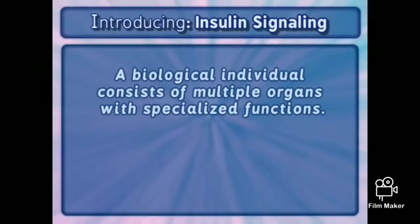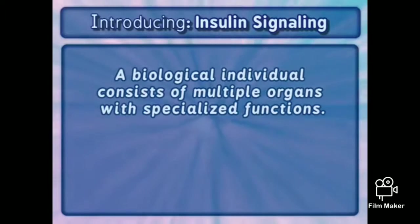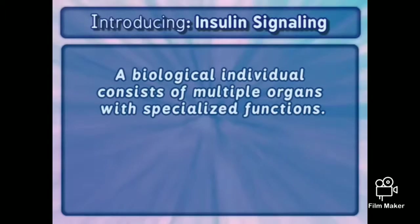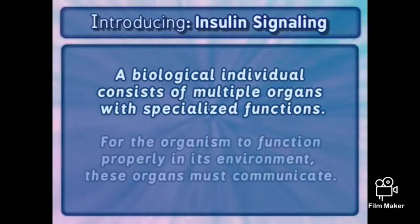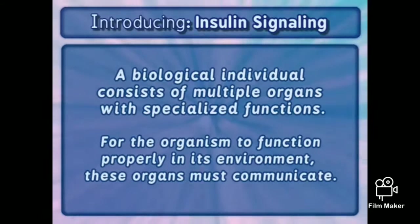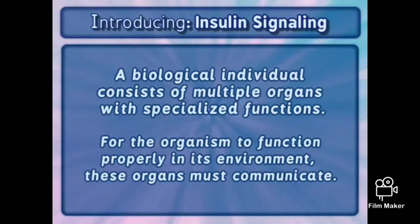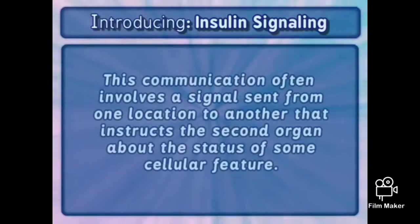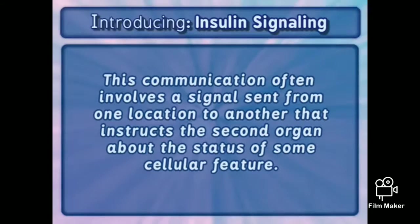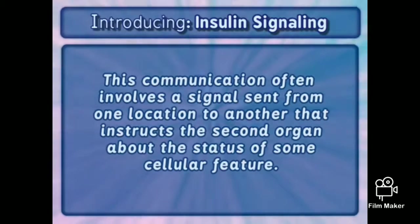A biological individual consists of multiple organs with specialized functions. For the organism to function properly in its environment, these organs must communicate. This communication often involves a signal sent from one location to another that instructs the second organ about the status of some cellular creature.